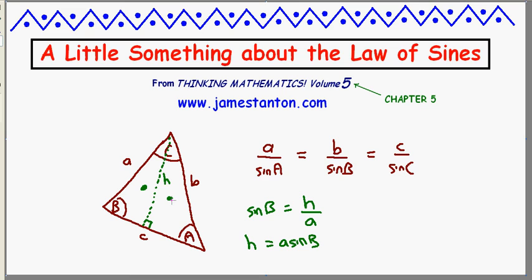Well, by the same token, I can work out the height of this triangle by looking at the right triangle, and I see that sine of A is actually h over little b. So h is also b times sine of a.